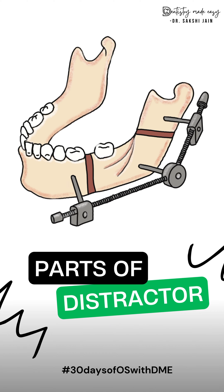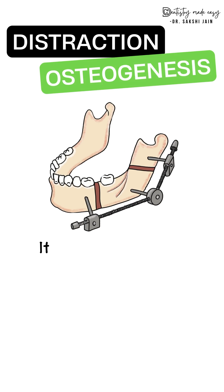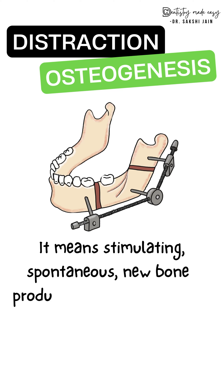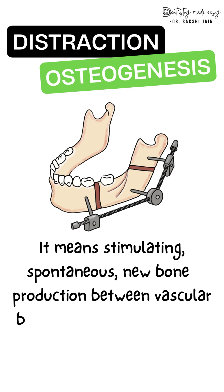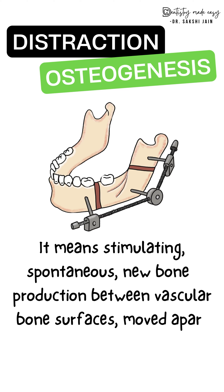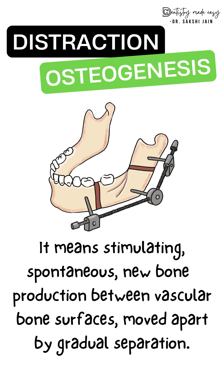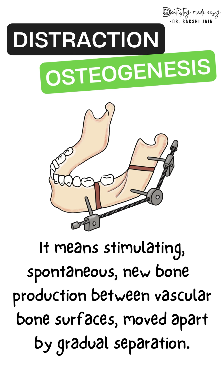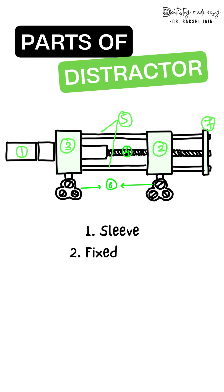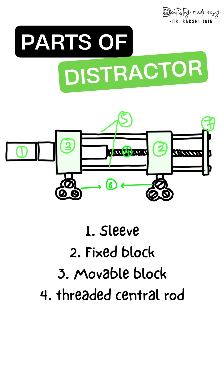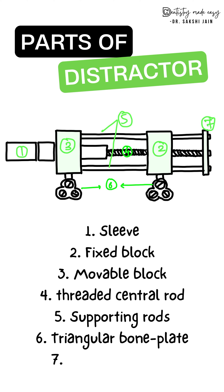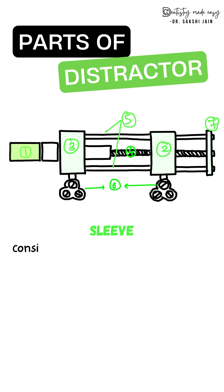Starting with the next topic: the parts of the distractor. This is a device used for distraction osteogenesis. Distraction osteogenesis is the formation of new bone by moving the segments apart. The parts of the distractor are: sleeves, fixed and movable blocks, a central threaded rod, supporting rods, screws, triangular bone plates, stabilizing plates, and a screwdriver.